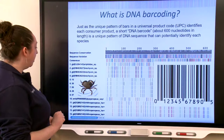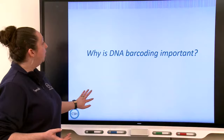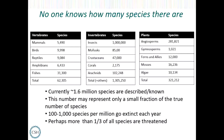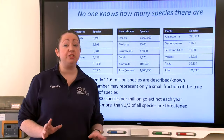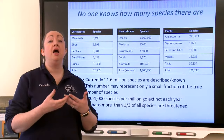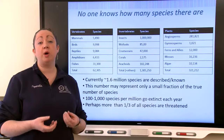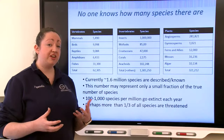Why is DNA barcoding important? No one knows how many species there are — currently about 1.6 million species are described, but this may represent only a small fraction of the true number, especially considering bacteria. There are 100 to 1,000 species per million going extinct every single year, and perhaps more than a third of all species are threatened. We may be losing species faster than we can identify them — losing species we never knew existed. Scientists say we are currently in the sixth mass extinction event in history.